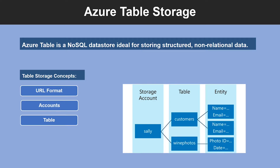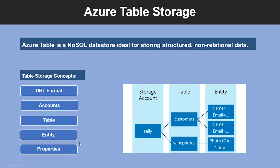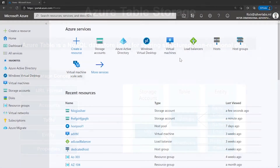Tables don't enforce a schema on entities, which means a single table can contain entities that have different sets of properties. An entity is a set of properties similar to a database row. An entity in Azure Storage can be up to 1 MB in size; an entity in Azure Cosmos DB can be up to 2 MB in size. A property is a name-value pair. Each entity can include up to 252 properties to store data. Each entity also has three system properties that specify a partition key, a row key, and a timestamp.